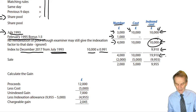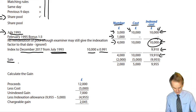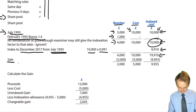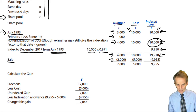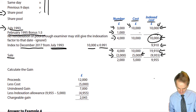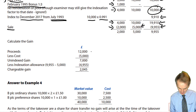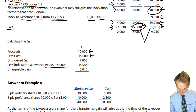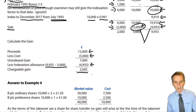That gives a re-indexation figure of £9,910 in the index cost column, which upgrades the index cost to £19,910. Now we can deal with the disposal in March 2022. 2,000 shares are being sold out of a pool of 4,000 — that's half. So we take half the cost and half the index cost, giving a cost of £5,000 and an index cost of £9,955.